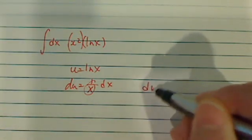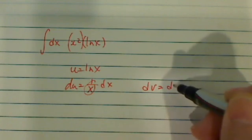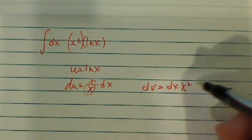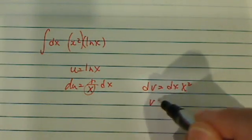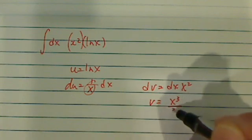So the goal is that you want it to be power going downward, not upward. Okay, so dv is equal to this, so v is equal to x cubed over 3. So far, so good.